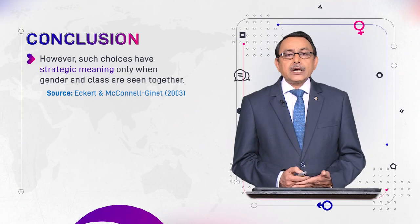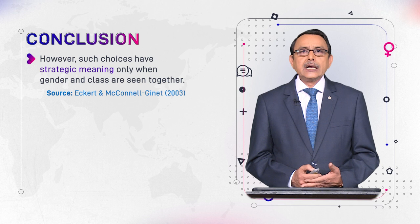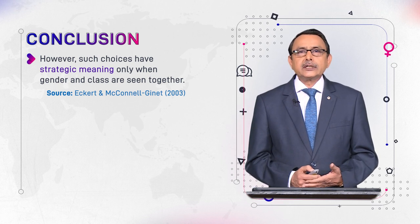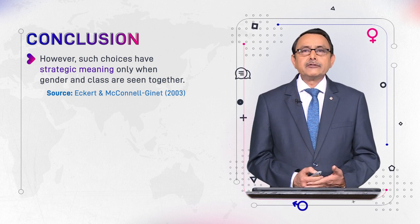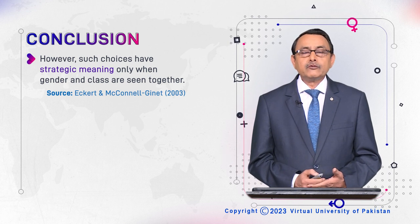Similarly, in the second case, pronunciations like 'file as foil' and 'line as loin' are related to females — specifically working-class females, who introduce changes in pronunciation. So this is not related only with gender; class identity is also associated. The researchers conclude that language use is not exclusively linked with gender or separately linked with social class — it is linked with both via identity.